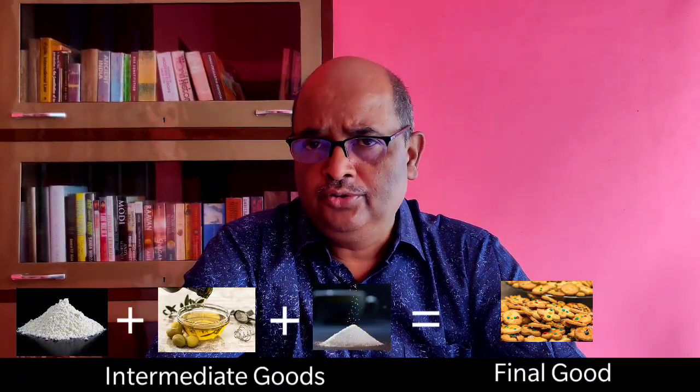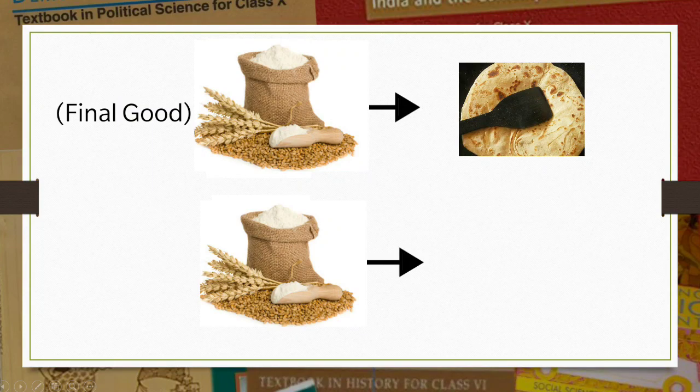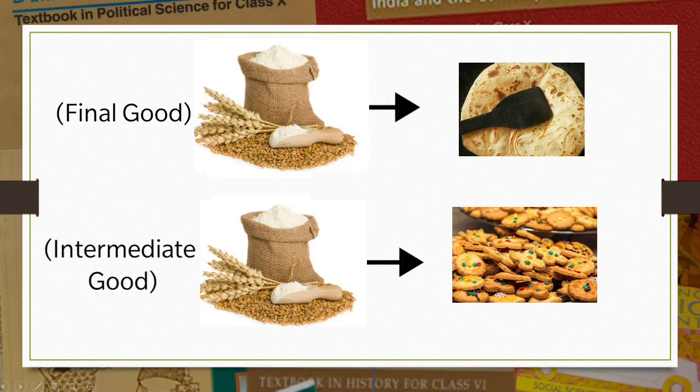Now let us understand intermediate goods. Suppose there is a biscuit company. To make biscuits it purchases flour (atta), oil, and sugar. Here biscuit is a final good, but flour, sugar, and oil are intermediate goods. Intermediate goods are used up in the production of final goods. But we must be cautious: if you buy an atta bag to make chapati at home, atta is a final good. But the same atta bag bought by a biscuit company to make biscuits — atta becomes an intermediate good.